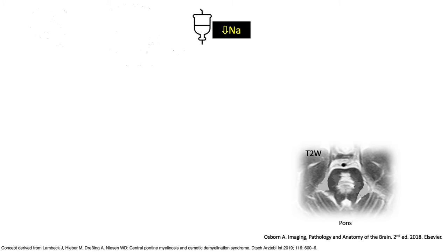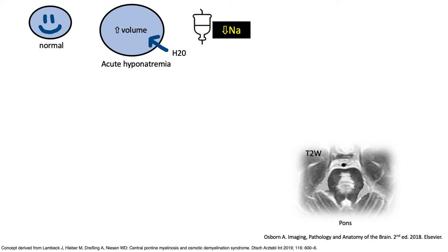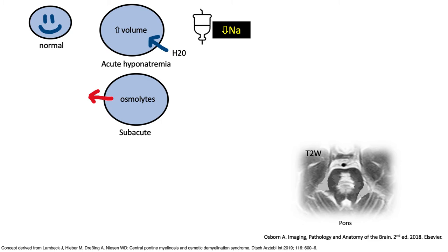Hyponatremia is coupled by entry of water into the cell to balance the osmolality inside and outside the cell. This results in an increased cell volume in acute hyponatremia. To revert to the normal cell volume, the osmolites within the cell will leak out so that water will also exit. So by 48 hours, the cell volume is now normal, but at the expense of the osmolites, which are now very few inside the cell.